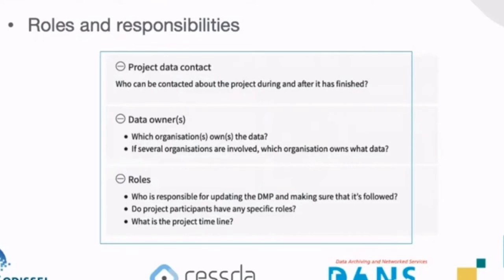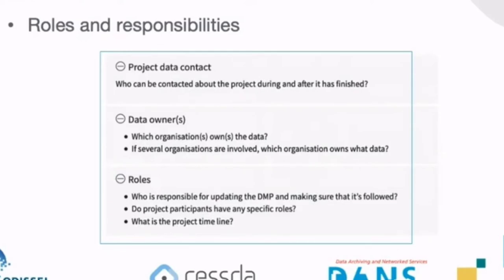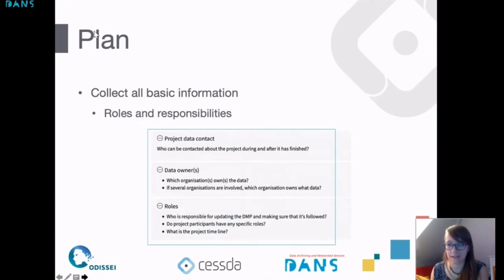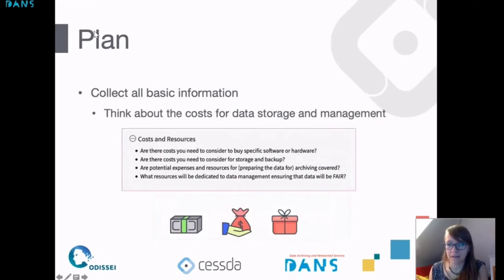Are there specific rules from the organizations you're collaborating with? Are there specific people you need to involve? Having all of this information clarified at the start of your project can be really helpful. The data management expert guide gives you an overview of the different questions you can ask about roles and responsibilities — for instance, who is the contact person, who is the data owner, and who is responsible for the data management plan. This is something that is good to think about at the beginning of your project.